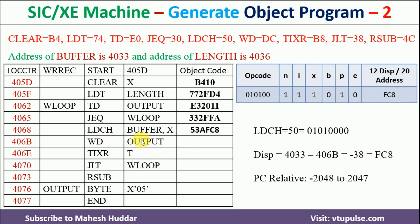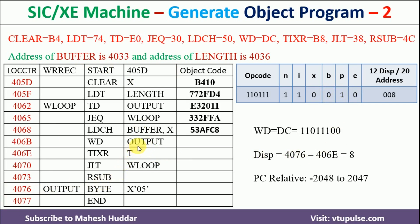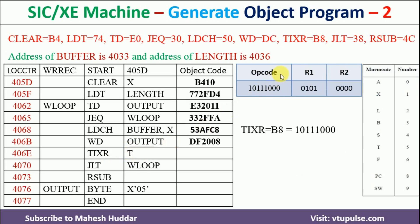Next is WD OUTPUT. WD's opcode is DC. Most significant 6 bits written. Neither immediate nor indirect nor index addressing, so N=1, I=1, X=0. E=0. Displacement = OUTPUT (4076) minus PC (406E) = 8, which is positive and falls in the PC-relative range, so P=1, B=0. Writing 8 as 12 bits gives 008, and converting to hexadecimal yields DF2008. Next is TIXR T, which is type 2 because T is a register. The opcode B8 is written, T's value is 5, and R2 is not present so it is 0, giving B850.